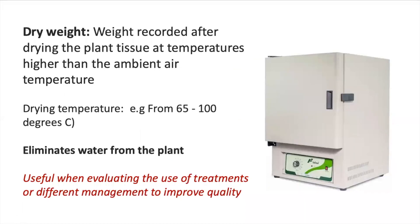On the other hand, we also have dry weight. Dry weight is defined as the weight recorded after drying plant tissue at temperatures higher than ambient temperature. This drying process will eliminate water from the plant and is very useful when we are looking to evaluate crop performance, especially after applying treatments to improve yield or quality.